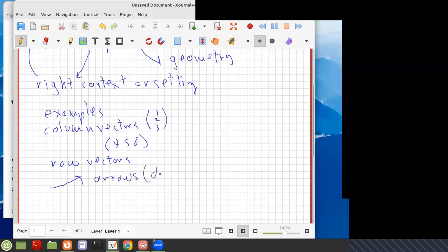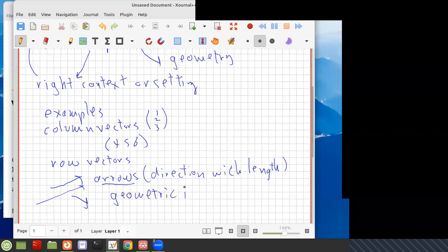This is like arrows. An arrow is a direction with length. Because this could be this length, we could have one that's longer, and you could have one that points in different direction. So these arrows are geometric, a geometric item.